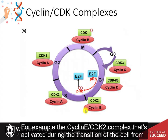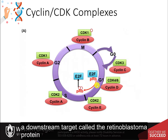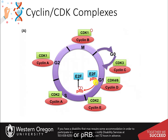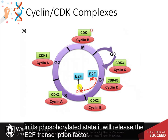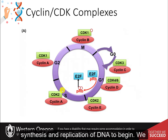For example, the cyclin-E/CDK2 complex activated during the transition from G1 phase into the synthesis phase will phosphorylate a downstream target called the retinoblastoma protein, or PRB. In its phosphorylated state, it will release the E2F transcription factor, which will bind to DNA and cause the transcription of genes required for the synthesis and replication of DNA to begin.